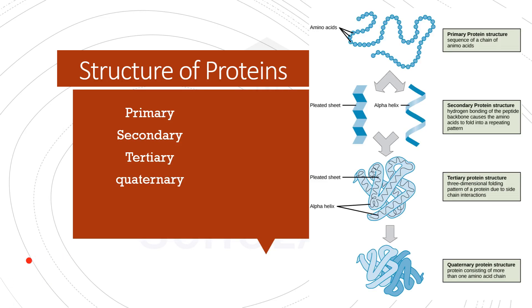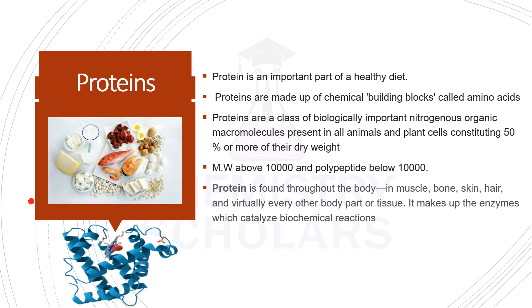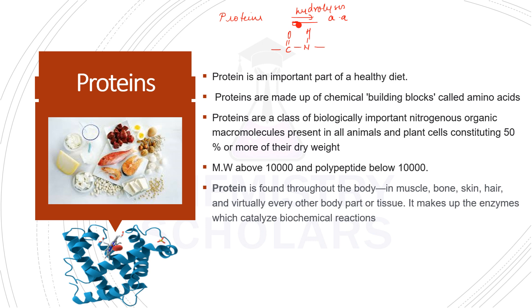In today's video we are going to study the four structures of proteins: primary, secondary, tertiary, and quaternary. First, let's define proteins — they are the body-building blocks and an important component of our diet. The major difference between proteins and polypeptides is molecular weight: above ten thousand we call them proteins, below ten thousand they are polypeptides. Both share the peptide linkage, CONH. Proteins on hydrolysis give amino acids, and when amino acids combine they give proteins.